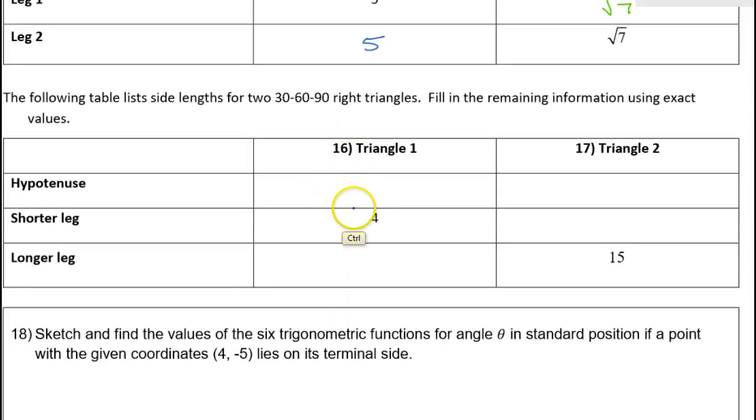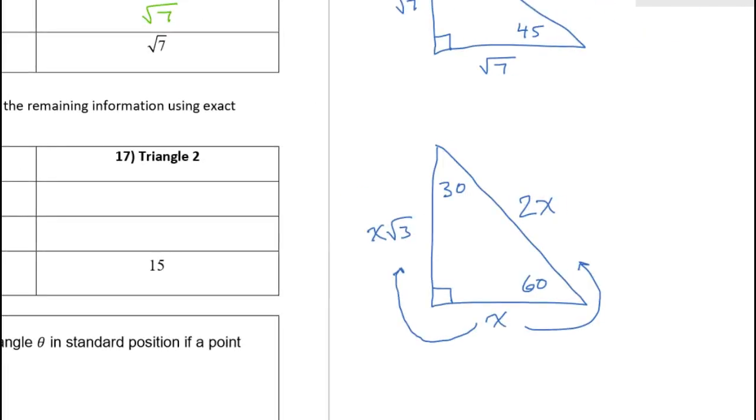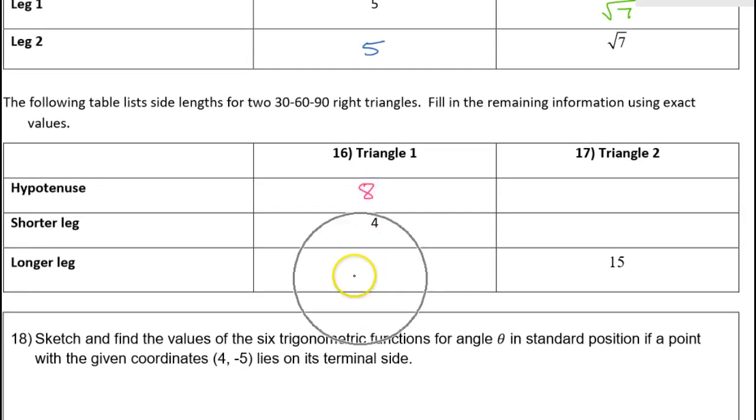For problem number 16, they were nice to us and gave us the short leg first. So the short leg is four. If the short leg is four, then the hypotenuse is going to be eight because it's just double the short leg. And then the long leg should be the short leg times radical three. So the hypotenuse is eight and the long leg is four radical three.